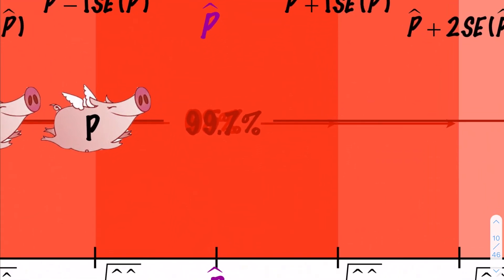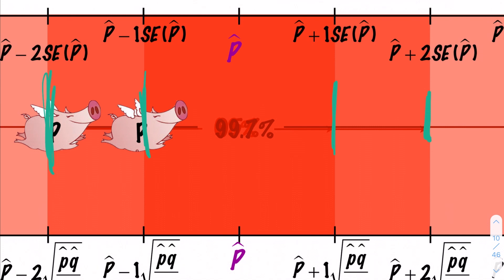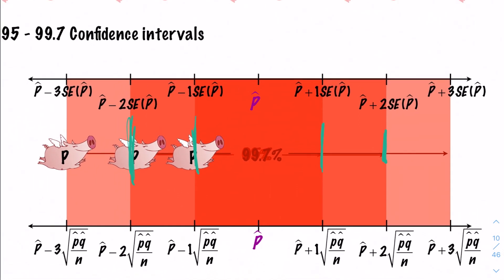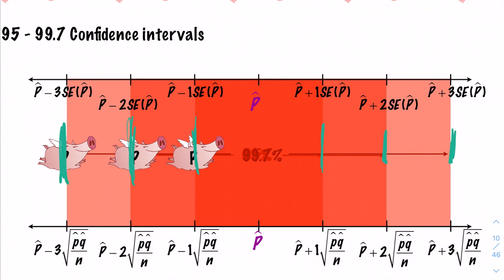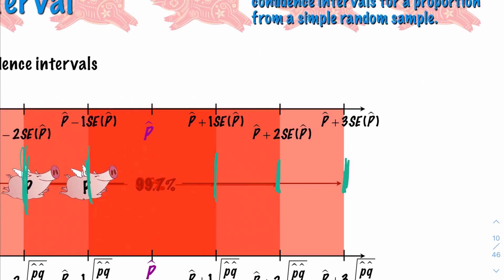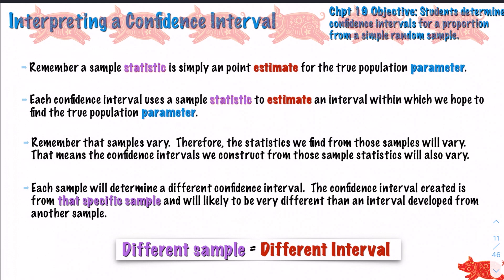Visually, if we're centered at p-hat and reach out one standard deviation, that's a 68% confidence interval - we could be 68% sure that p is within one standard deviation of our sample proportion. At 95%, we reach out a bit further. At three standard deviations, our confidence level becomes 99.7%. But as we reach further out, there's more certainty but less accuracy - your interval is wider, so it could be anywhere within that 99.7% interval, and that doesn't really help us. We have to decide how confident we want to be versus how accurate we want to be.